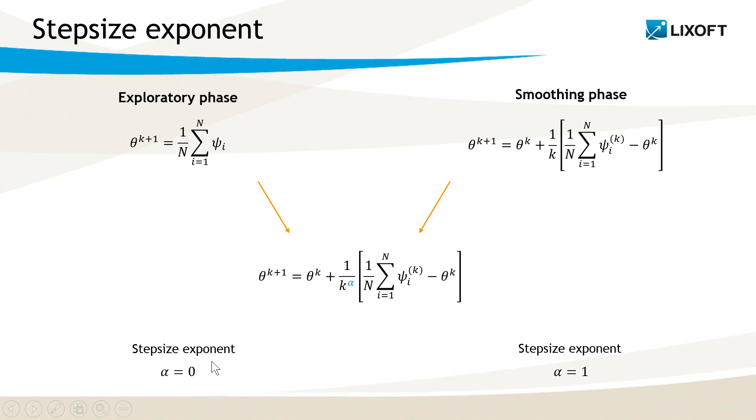If alpha is equal to zero, then this is one. The two thetas cancel out and I recover this formula here. And on the opposite, if alpha is equal to one, I recover this formula here. This alpha is the step size exponent.